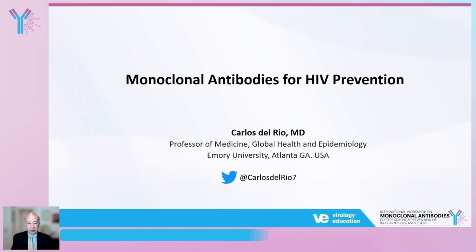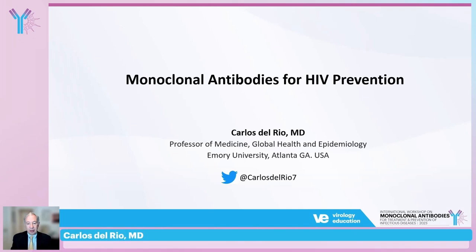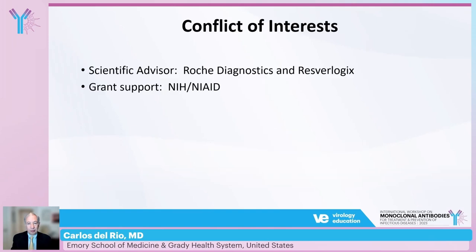My name is Carlos Del Rio and I'm a professor of medicine and global health and epidemiology at Emory University in Atlanta, Georgia. Today I will be talking about monoclonal antibodies for HIV prevention. These are my conflicts of interest — I was an investigator in the AMP study looking at monoclonal antibodies for HIV prevention.